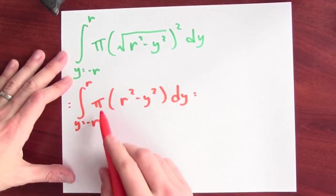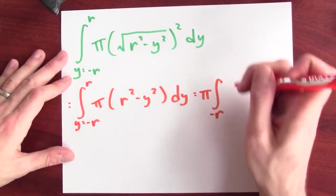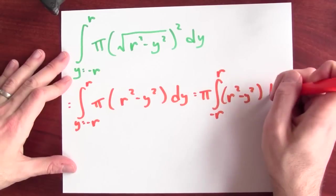I can simplify this a bit more. I've got a constant. I'll just pull that constant out. This is pi times the integral from minus r to r of r squared minus y squared dy.